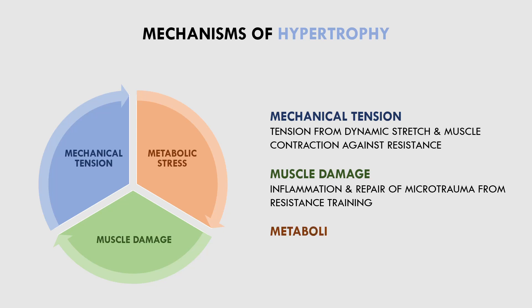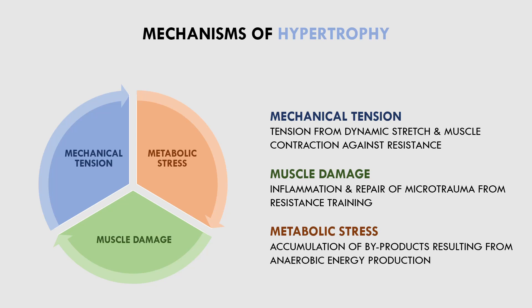Metabolic stress refers to the accumulation of metabolic byproducts in the muscle cells during resistance training. This occurs as a result of anaerobic metabolism and causes fatigue of the active muscle fibres. As the muscle fibres fatigue, high threshold motor units are recruited, which exposes them to mechanical tension. It is still unclear if metabolic stress has an independent influence on hypertrophy or if it indirectly promotes hypertrophy via its fatigue effects leading to greater mechanical tension.